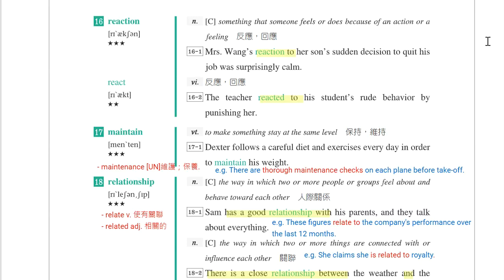好，各位同学大家好，我们现在接着继续第二册第九课后半部的单字。第十六个单字是reaction，表示反应、回应。例句：Mrs. Wong's reaction to her son's sudden decision to quit his job was surprisingly calm。Mrs. Wong对于他儿子突然的决定的反应，是出乎预料之外的冷静。Reaction to something，对于什么事情的反应。